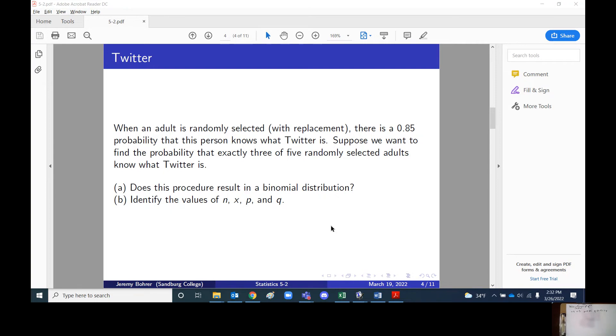P is the probability, which is 0.85 and q is one minus p, which is 0.15.